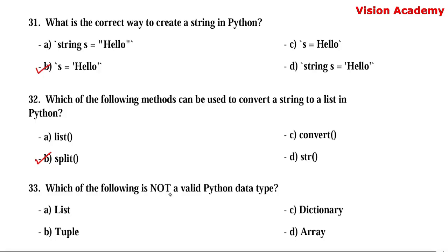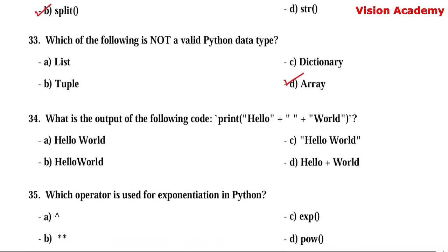Question number 33. Which of the following is not a valid Python data type? Option A: list. Option B: tuple. Option C: dictionary. Option D: array. List, tuple, and dictionary are valid data types in Python. Array is not a built-in Python data type. Hence, option D — array — is the right answer.